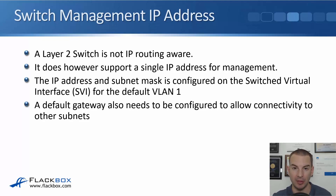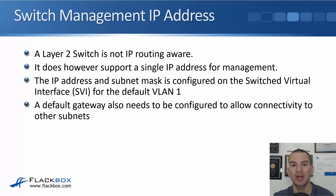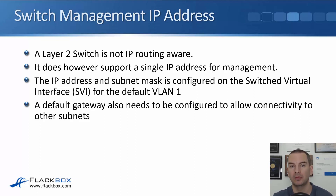Now, I know we haven't covered VLANs yet — they're going to be configured in another section. For now, all you need to know is that the default VLAN is VLAN 1, and all of our layer 2 switch ports on a switch will be in VLAN 1 by default. So to get management connectivity to that switch, we configure our management IP address on the virtual VLAN 1 interface.